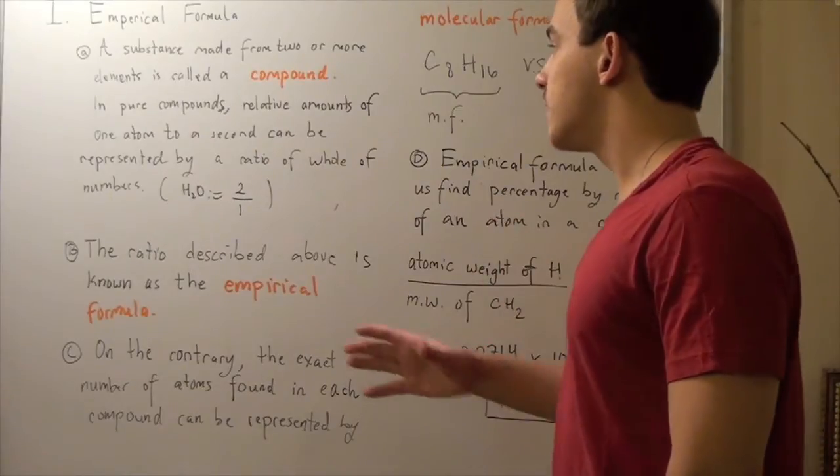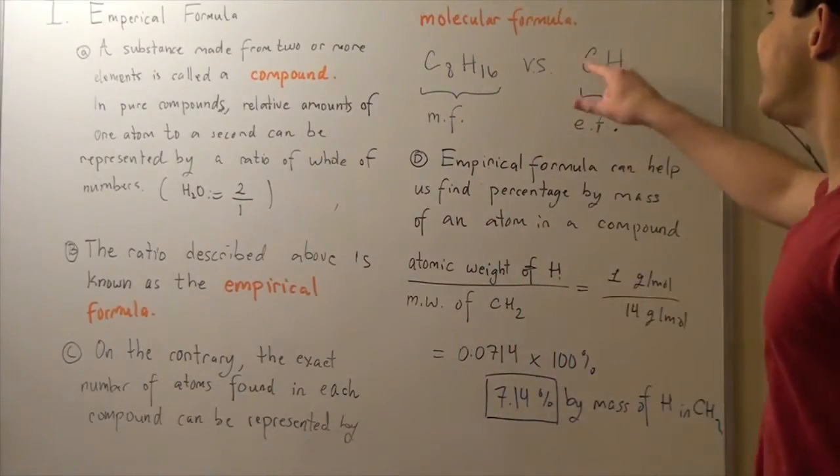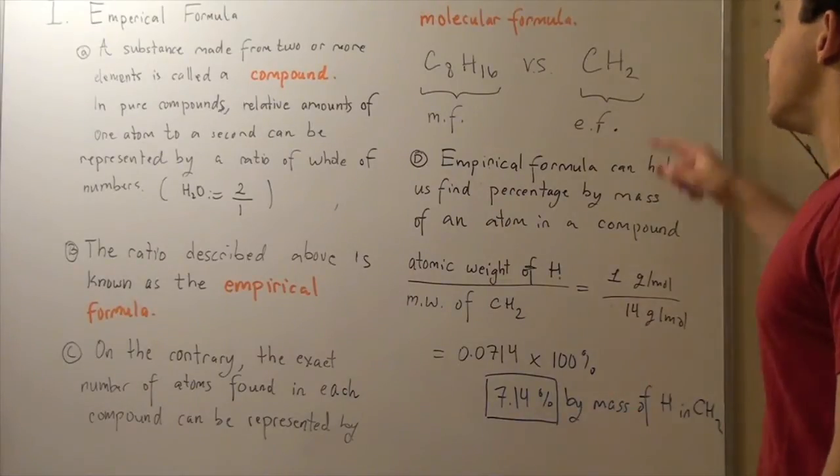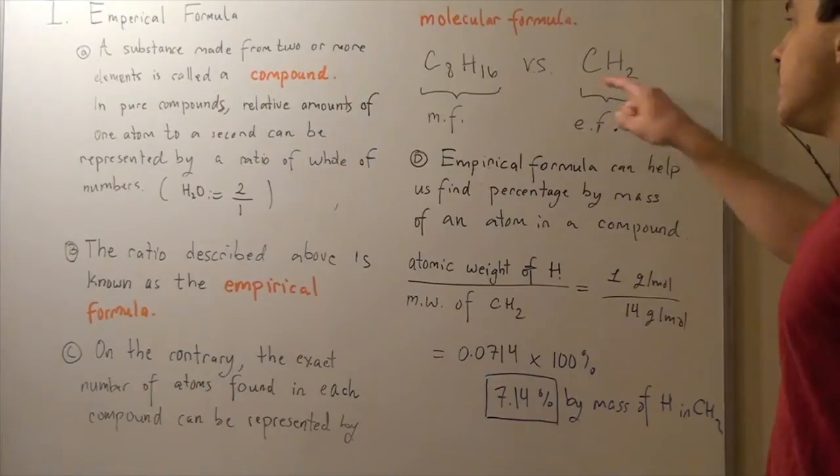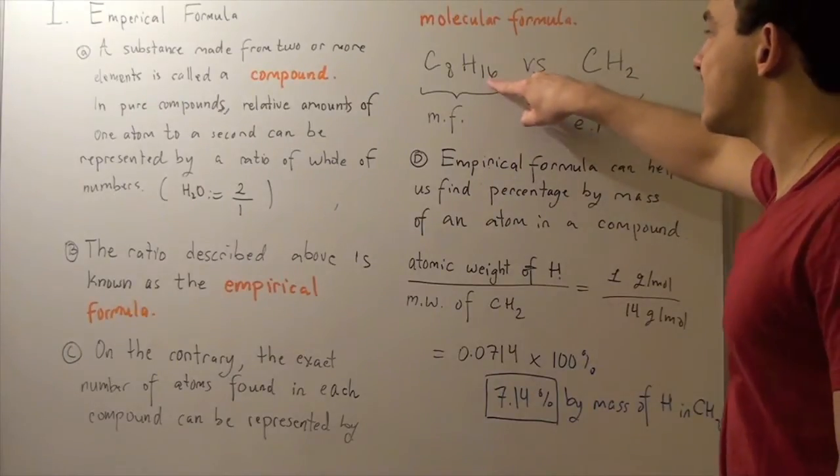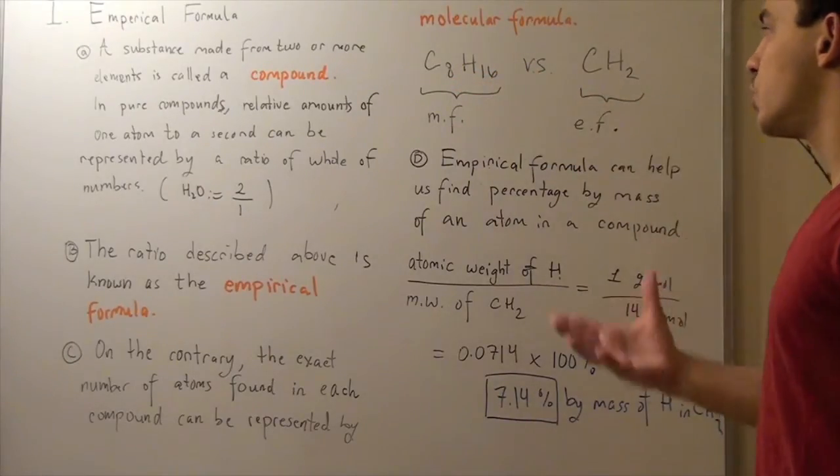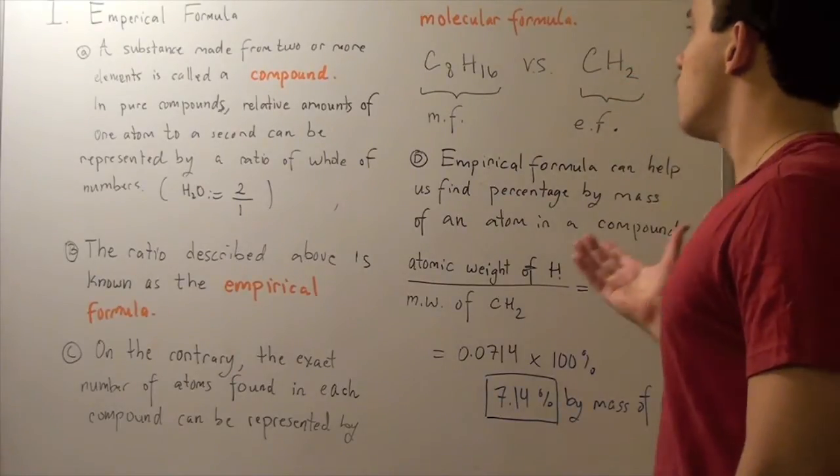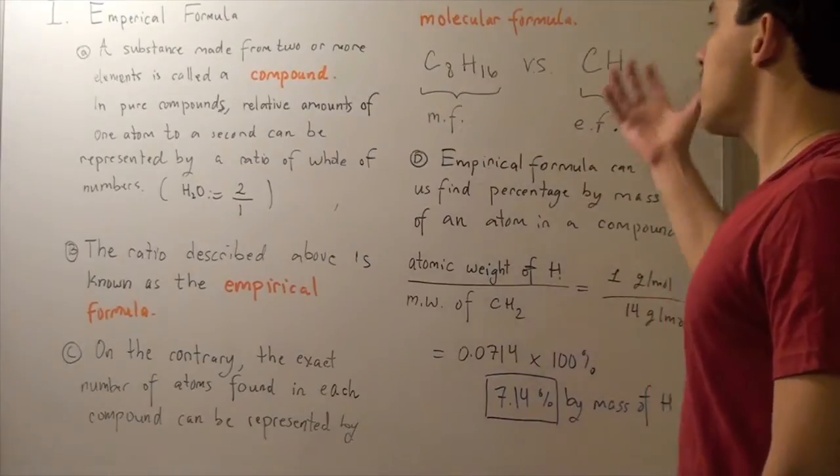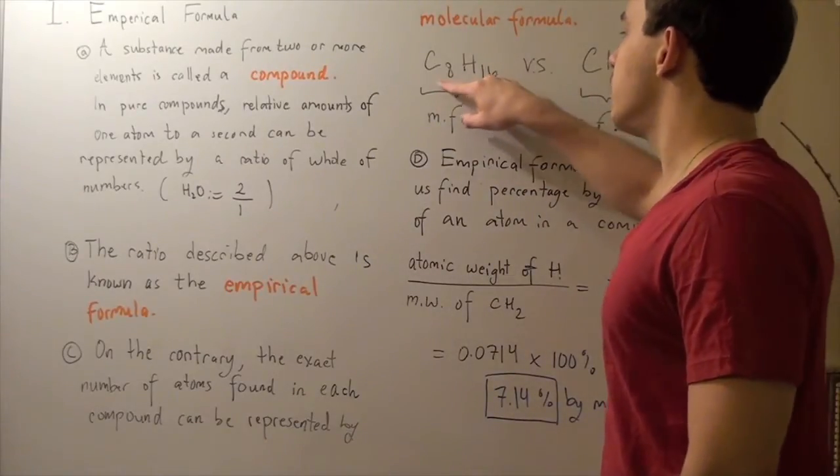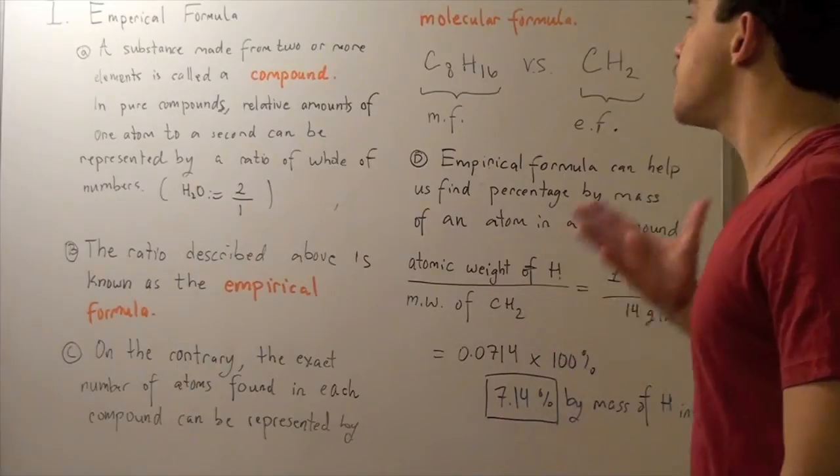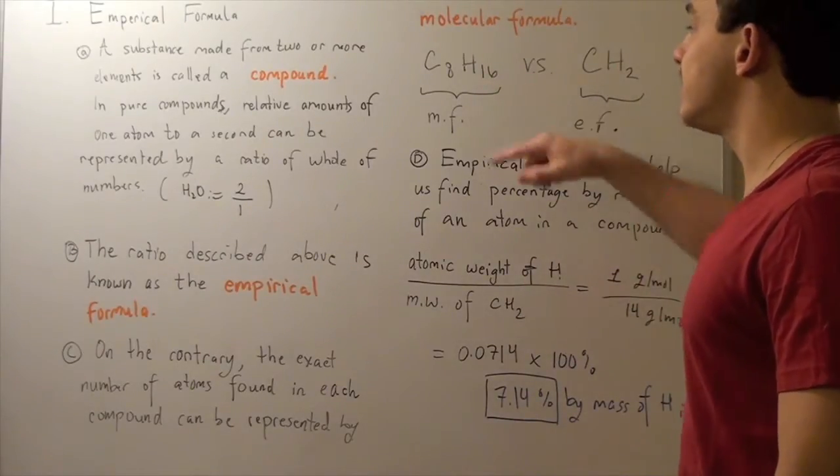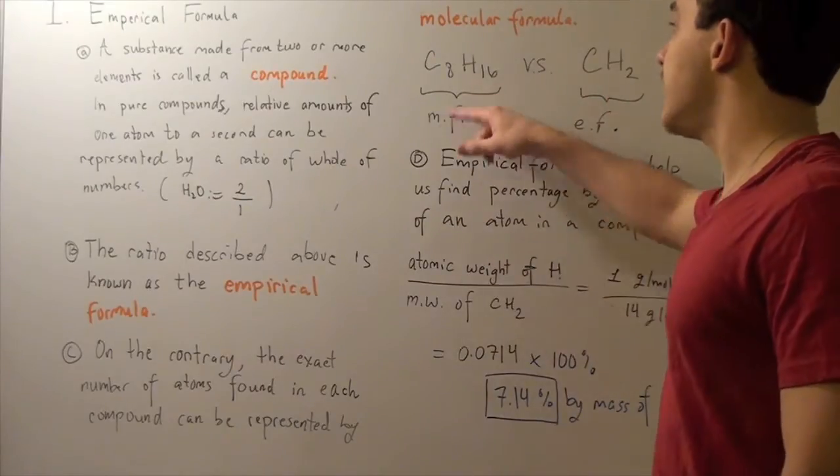However, the empirical formula for this molecule is C1H2. In other words, for every two H molecules, there's one C molecule. And if we divide 16 by 8, we also get 2, the same way if we divide 2 by 1. So the way you basically go from a molecular to an empirical formula is you find a common number and you divide it by that common number, making sure that we get whole numbers. So in this case, 8 goes into 16 twice and 8 goes into 8 once.